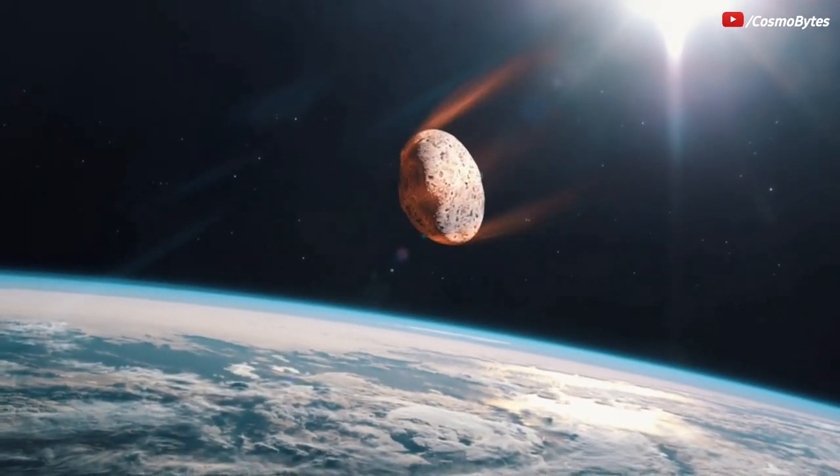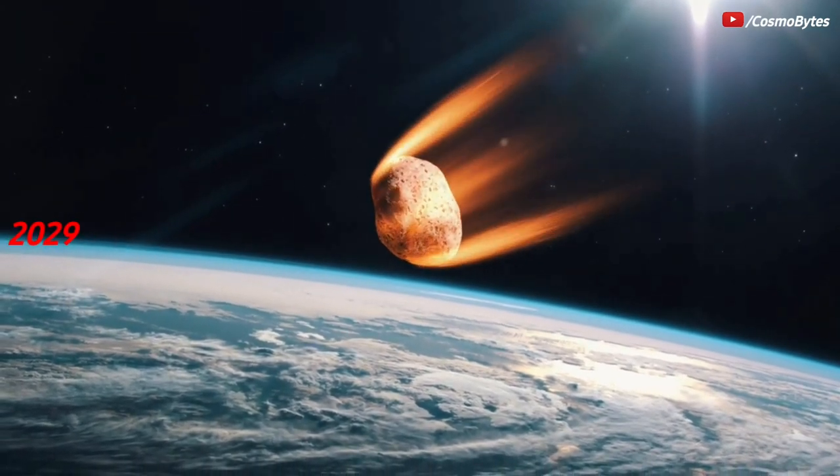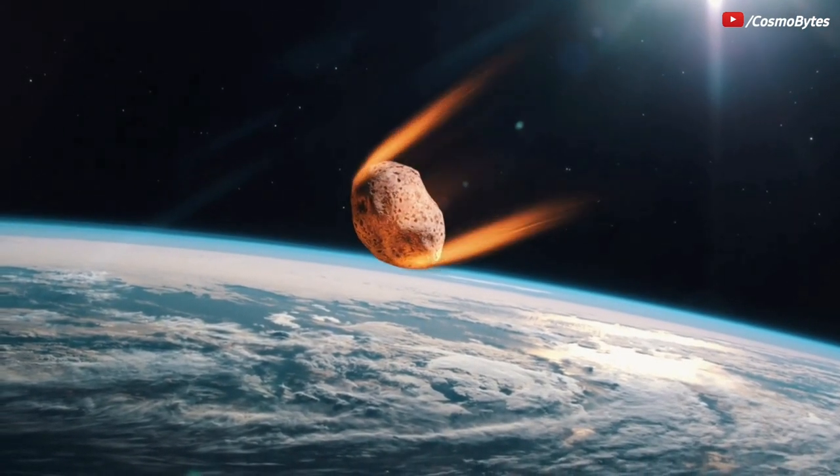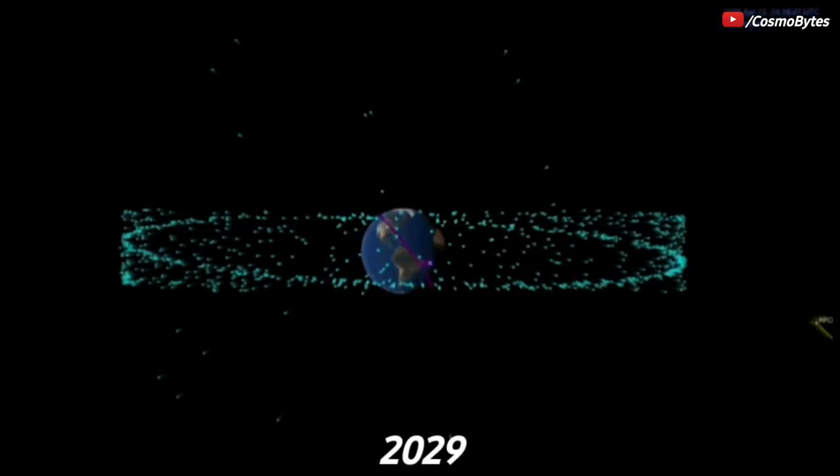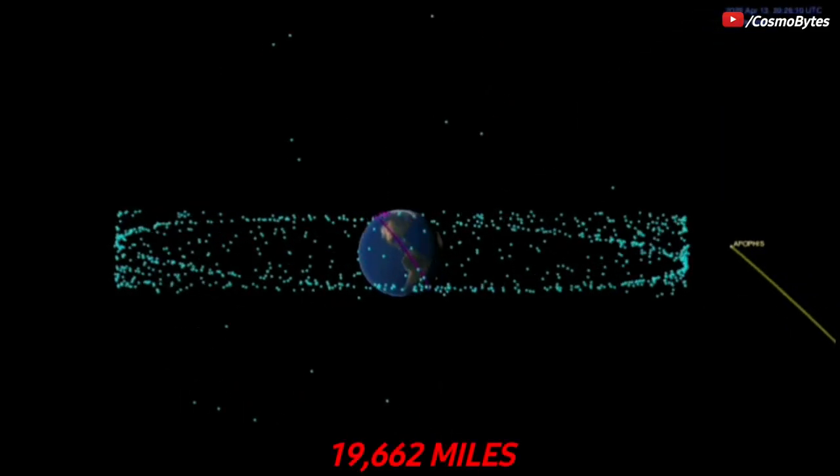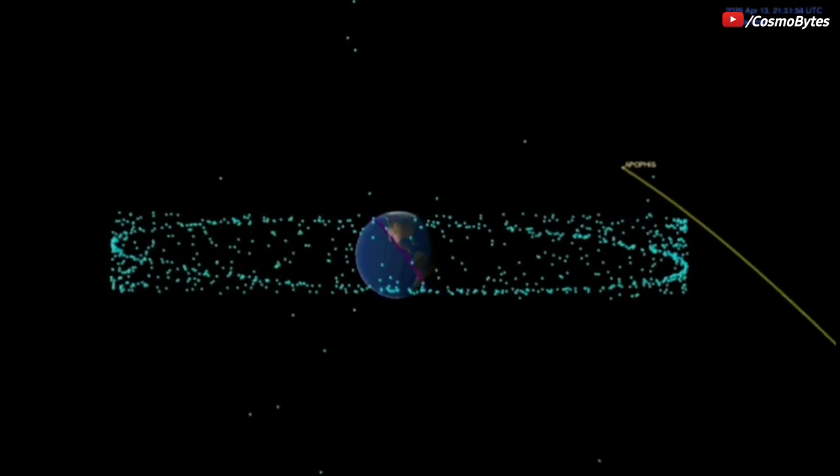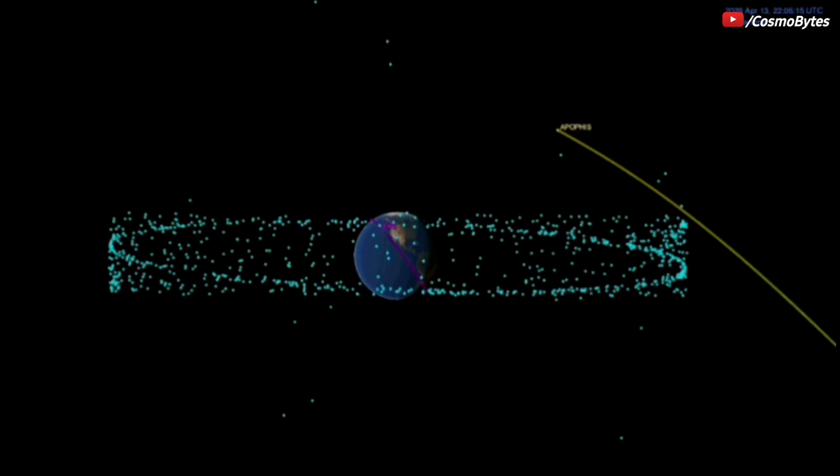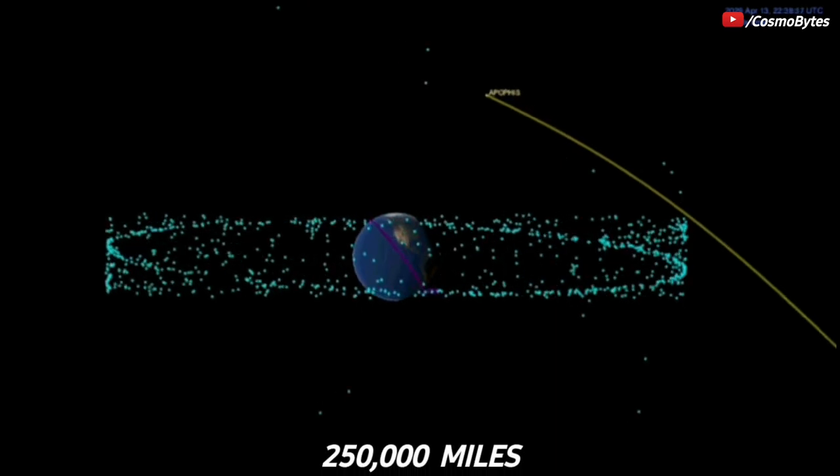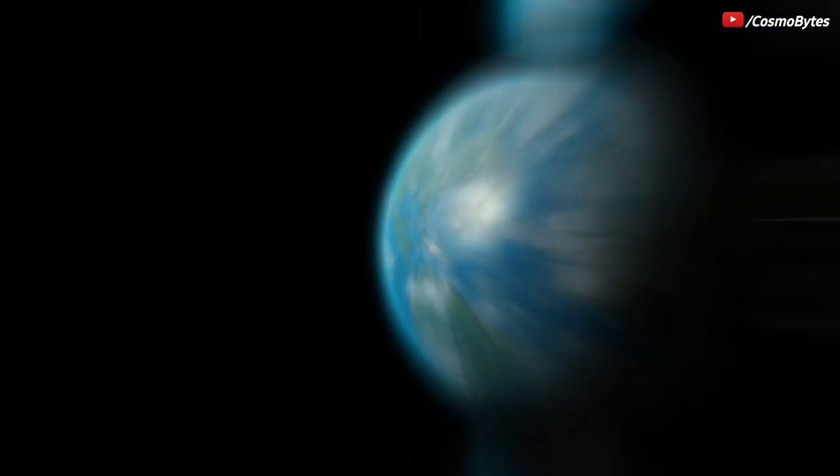Calculations in recent years have proven the asteroid will safely glide past Earth in both 2029 and 2036. In 2029, Apophis should pass at a nominal distance of 19,662 miles from the Earth's surface. That's in contrast to the Moon's average distance of about 250,000 miles, and it's closer than many Earth-orbiting satellites.